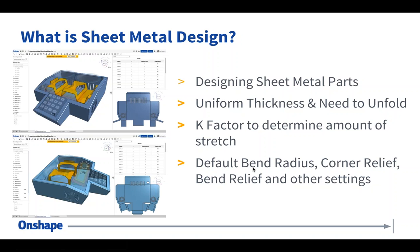What is sheet metal design? You're designing parts made out of sheet metal, but there are a few rules. Sheet metal has a uniform thickness and it needs to unfold. It's not just designing a folded sheet metal part — it's the ability for that part to unfold. A good example is K-Factor, which determines the amount of stretch a part experiences when unfolding and therefore goes into the flat calculation — a very important part of sheet metal design.